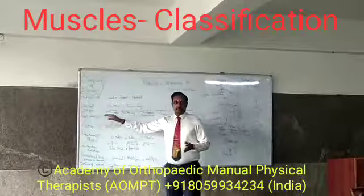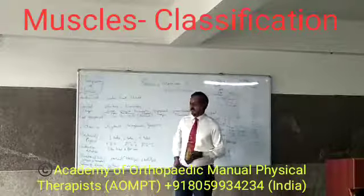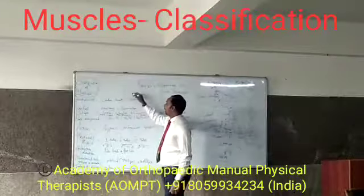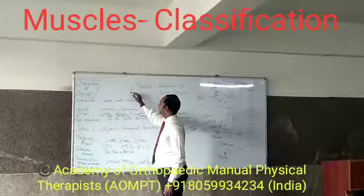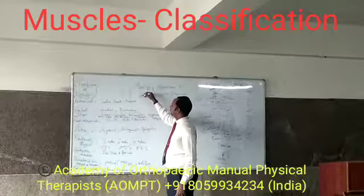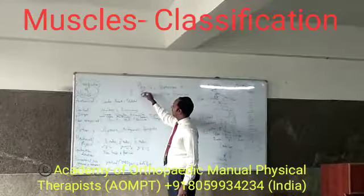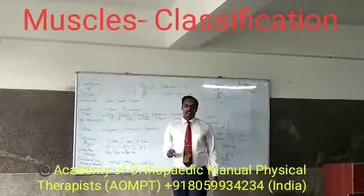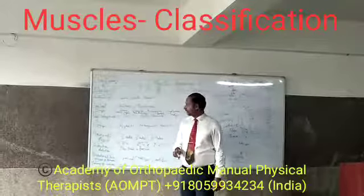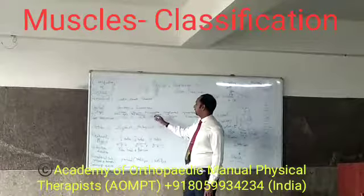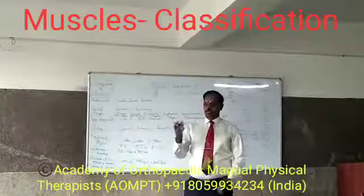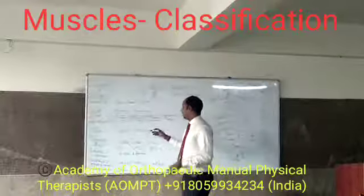Fiber arrangement: some fibers can be arranged as unipennate, others can be bipennate on both sides, and some can be multipennate. In deltoid, the middle fibers have multipennate alignment. Most of the other muscles are unipennate, like the lumbricals. The palmar and dorsal interossei are bipennate, attaching on both metacarpals.